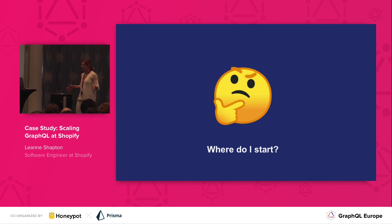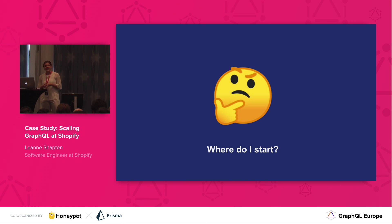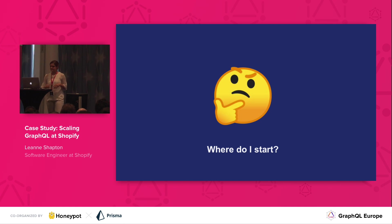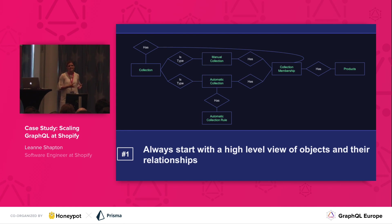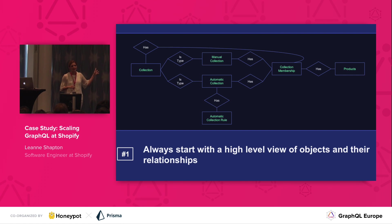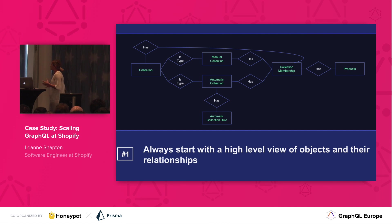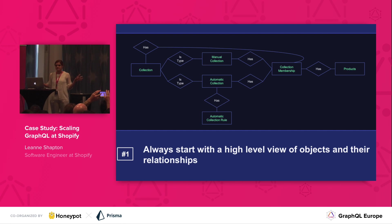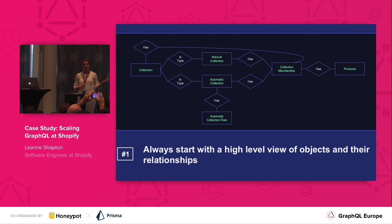Designing APIs is hard. Designing GraphQL APIs is also complicated. What we want to do is take a step back and focus on the high-level objects and their relationships — we're not going to be concerned with fields or mutations at this point. A way to do this is to build an entity relationship model. So you can show the objects and the relationships between them. Here we have a collection that can be one of two types — automatic and manual. Automatic collections have a rule, and there's this thing called collection memberships that join products to collections. So our first guideline is: always start with a high-level view of objects and their relationships.